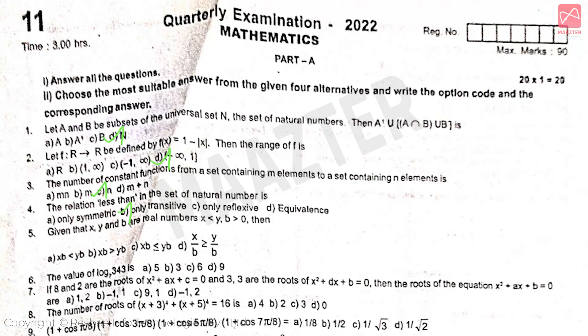Given that x, y and B are real numbers, answer is option A. The value of log base 7 of 343 is answer option B.